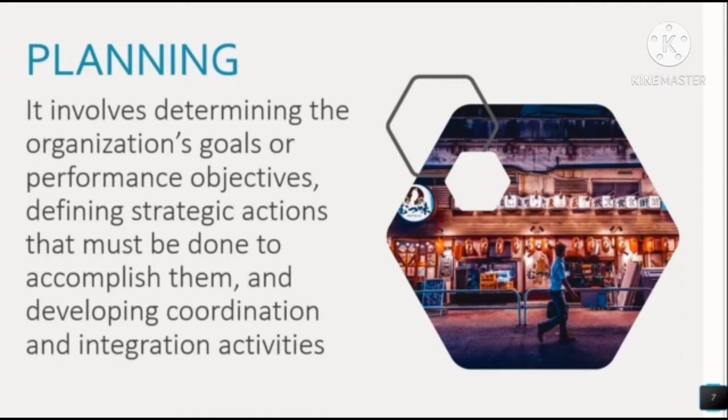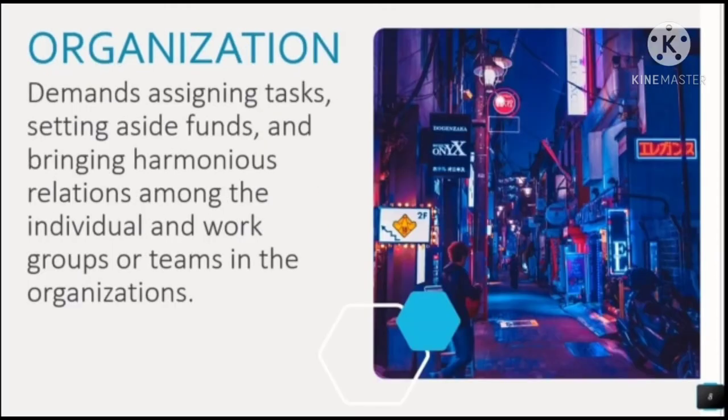In the planning function of management, it involves the identification of the company's goals or objectives and formulating strategic actions and activities that aim to achieve these goals or objectives. The organization function of management involves assigning specific tasks to each member of the organization, setting aside funds or budgets for each department, and building harmonious relationships amongst individuals so they can work as one team for the company.